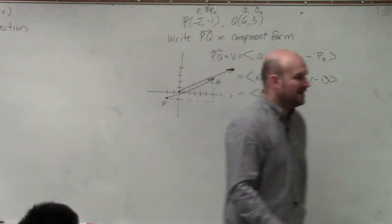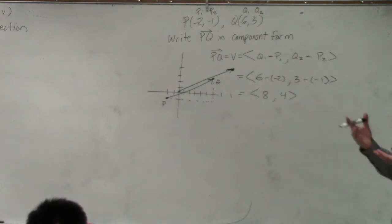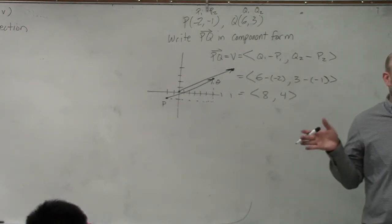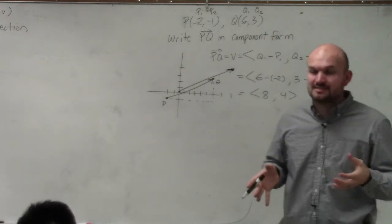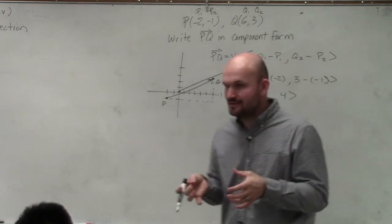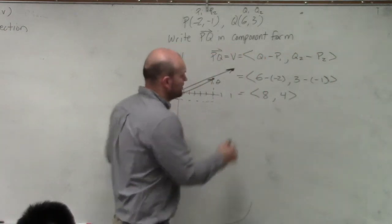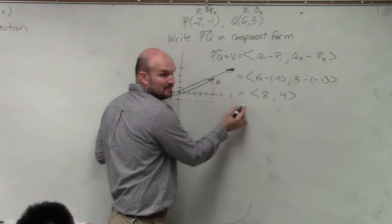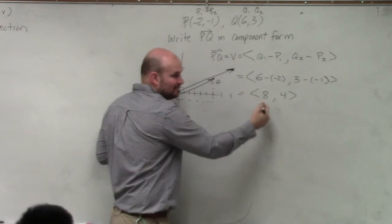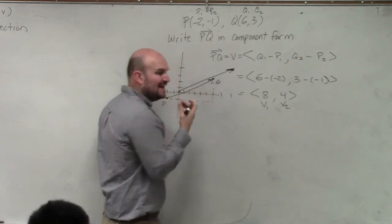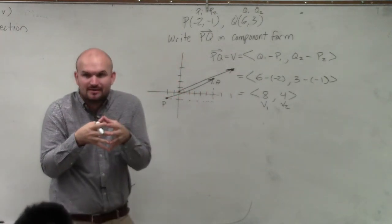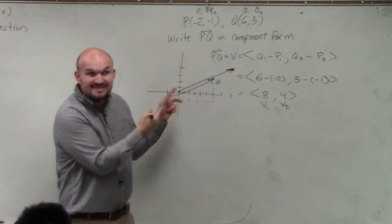Now, I know my graph is not perfect, but do you guys see that those vectors look pretty much the same, right? They have about the same magnitude and the same direction, correct? The difference is that my vector in component form—which I could say that's V1 and that's V2, those are the two components—has an initial position at where? Zero, right?